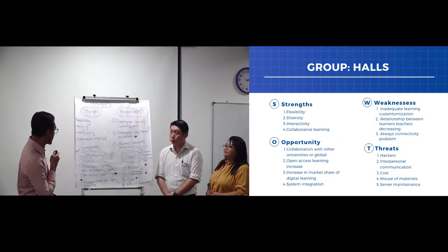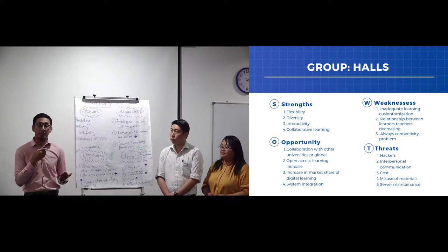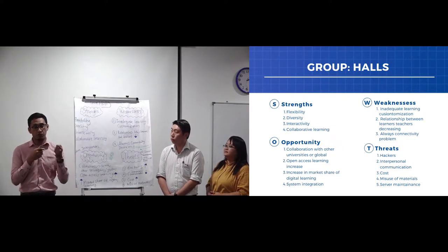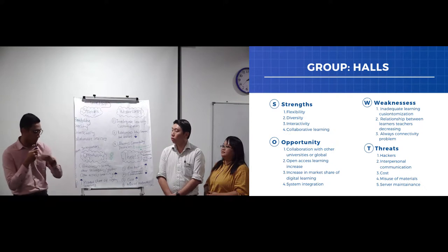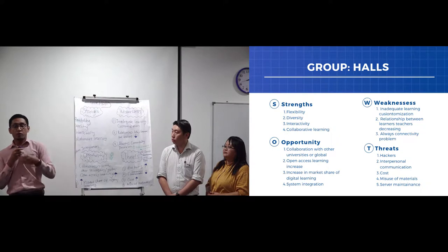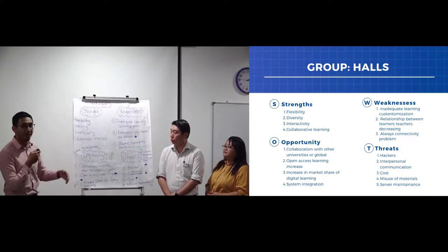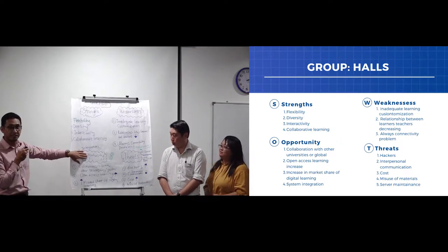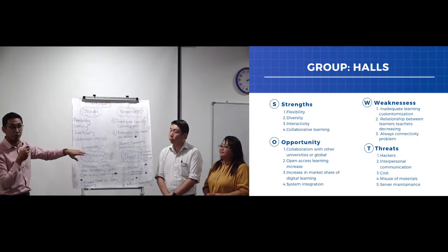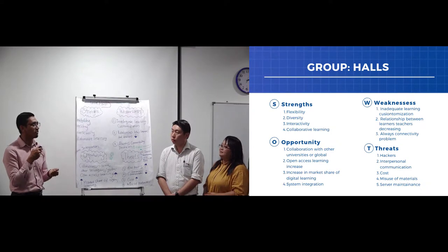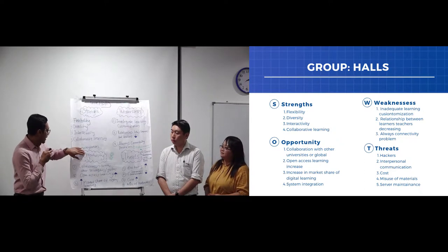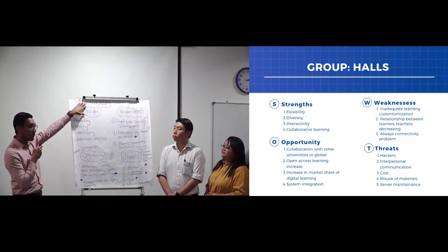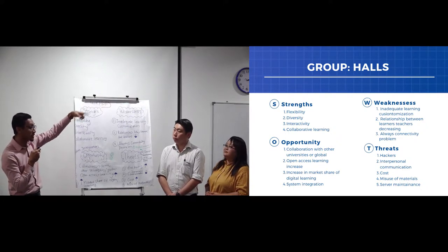Number three is increasing the market share of digital learning. Not all students can enjoy library materials due to costs such as purchasing books, so digital learning can be enjoyed by students from the rest of the world. Number four is system integration — we believe e-learning can be strengthened if we integrate existing systems at UMS, such as Smart UMS, OBE, and SMP, into one parent system from which all subsystems can be accessed.